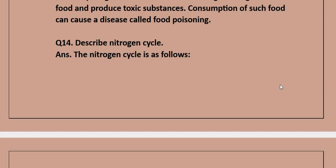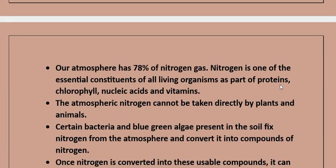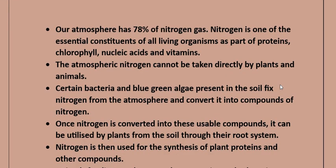Question 14: Describe the nitrogen cycle. Answer: Our atmosphere has 78 percent nitrogen gas. Nitrogen is one of the essential constituents of all living organisms, as part of proteins, chlorophyll, nucleic acids, and vitamins. The atmospheric nitrogen cannot be taken directly by plants and animals.